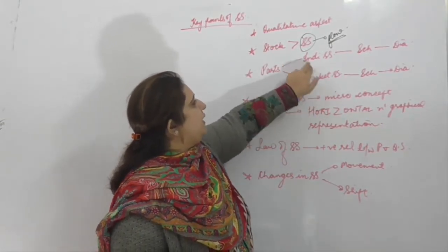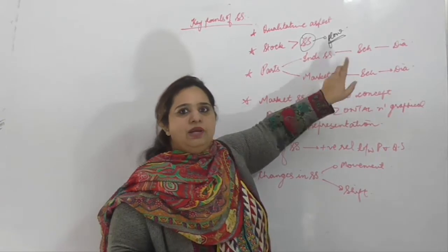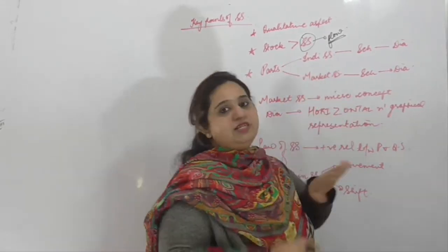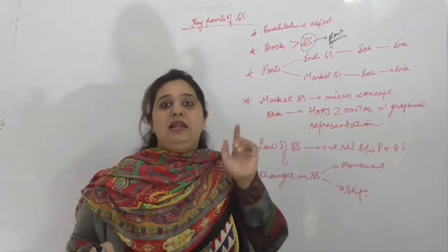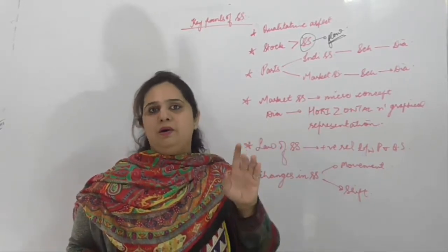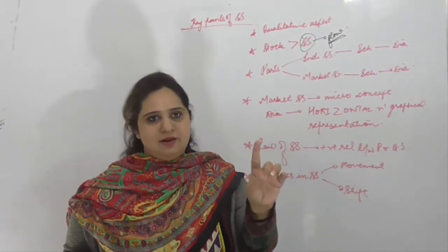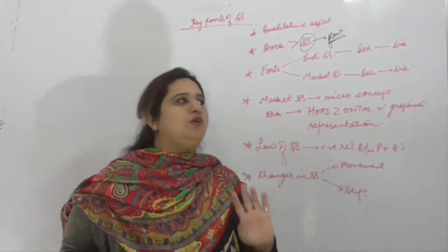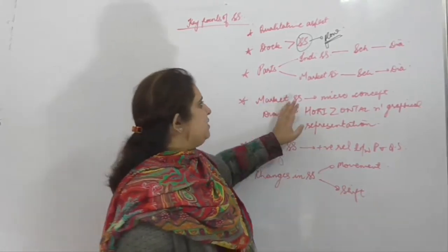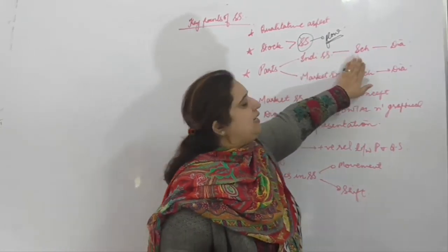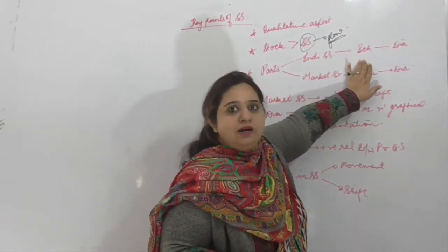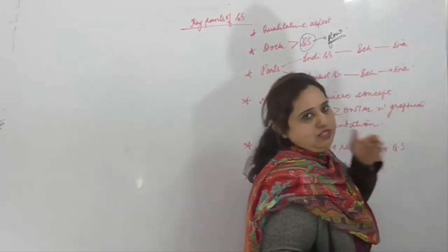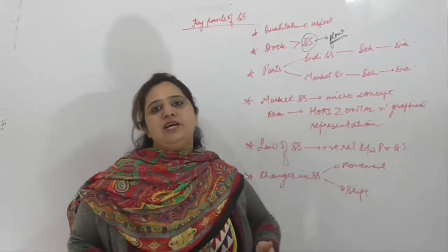Next, when we talk about the parts — एक individual supply होती है जहाँ पर एक firm है, और एक market supply होती है जहाँ पर बहुत सारी firms हैं। लेकिन market supply के लिए याद रखें — एक assumption है: market में सिर्फ दो suppliers हैं, सिर्फ दो firms हैं। Individual supply से related individual supply schedule पता होना चाहिए।